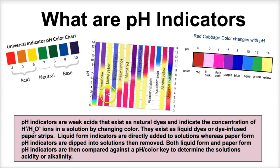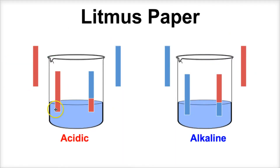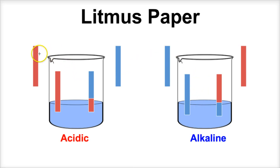So let's take a look at one pH indicator in particular — litmus paper. Litmus paper comes in blue and it comes in red. We have two solutions here: an acidic solution on the left and an alkaline solution on the right. If you take a red strip of litmus paper — which has a dye dried and soaked onto the paper — and put it in the acidic solution, nothing will happen to this red litmus paper.